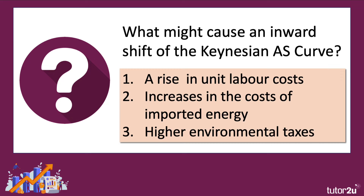Typically, an inward shift is caused by a rise or an increase in costs. So it could be, for example, wage costs per unit of output going up, or an increase in the price of imported energy, or perhaps the government has an effect on costs by imposing higher environmental taxes, such as a carbon tax.